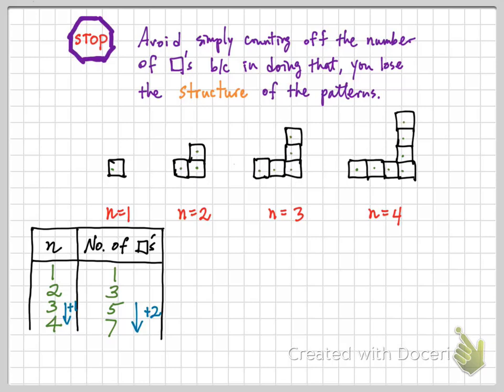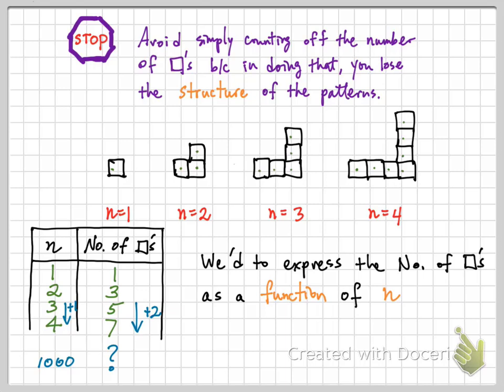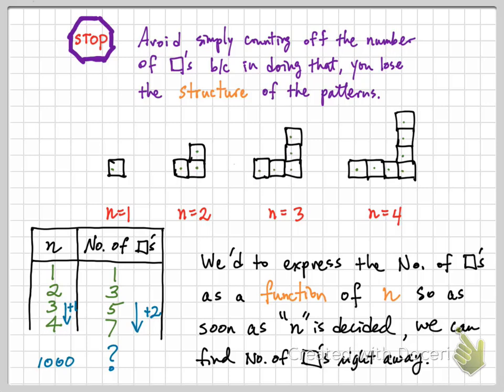But knowing that alone doesn't help us answer interesting design questions. For example, how many squares are there when n equals 1000? How does knowing we added two more squares each time help you answer that? The reason it's hard is because the relationship observed is a recursive one — the number of squares at any term depends on the previous term. We want a general expression independent of knowing the previous or next term; we want to express the number of squares as a function of n.